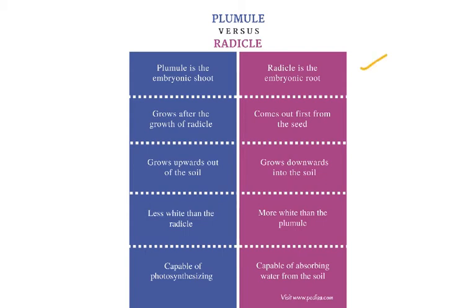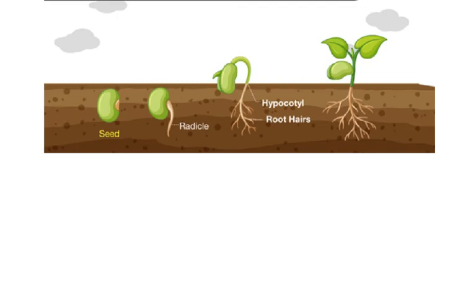The plumule grows after the radicle, which comes out first from the seed. The radicle grows downwards into the soil while the plumule grows upwards out of the soil. The radicle is more white than the plumule; the plumule is capable of photosynthesis while the radicle is capable of absorbing water from the soil.